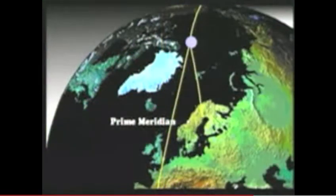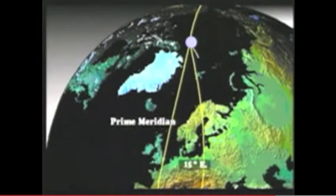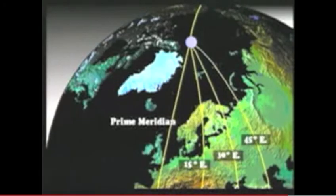When other meridians are drawn to the east of the prime meridian, we identify them by saying 15 degrees east, 30 degrees east, 45 degrees east, and so on.